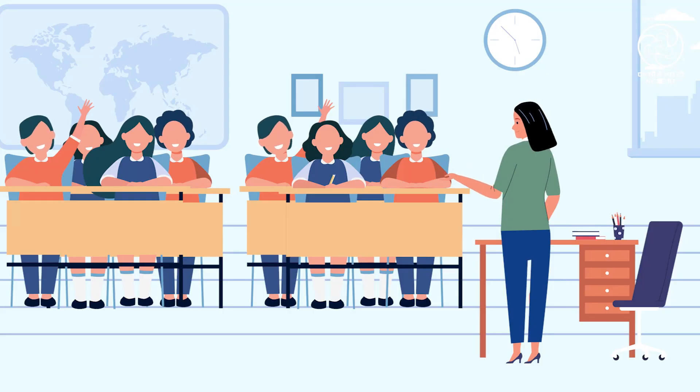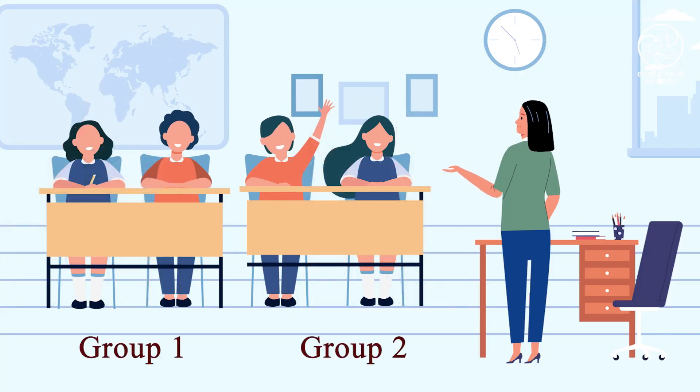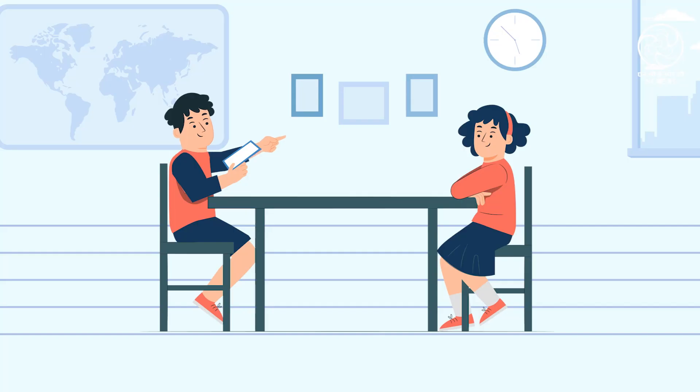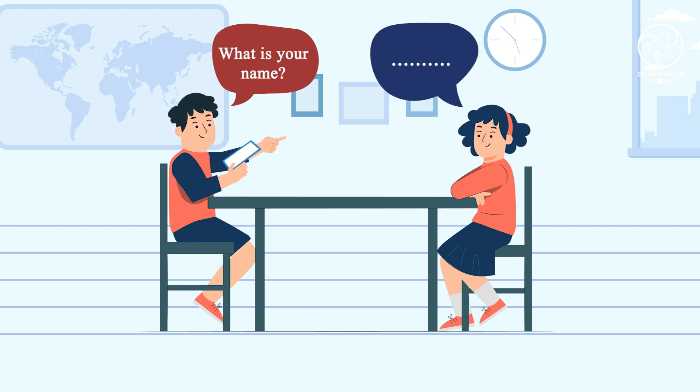The teacher will discuss about introducing oneself and filling forms in this activity. The teacher has to form groups of at least two students in the classroom. After forming the groups, the teacher should ask the students to introduce themselves to their partners and also give the details necessary to fill a form, which the other student would be doing.